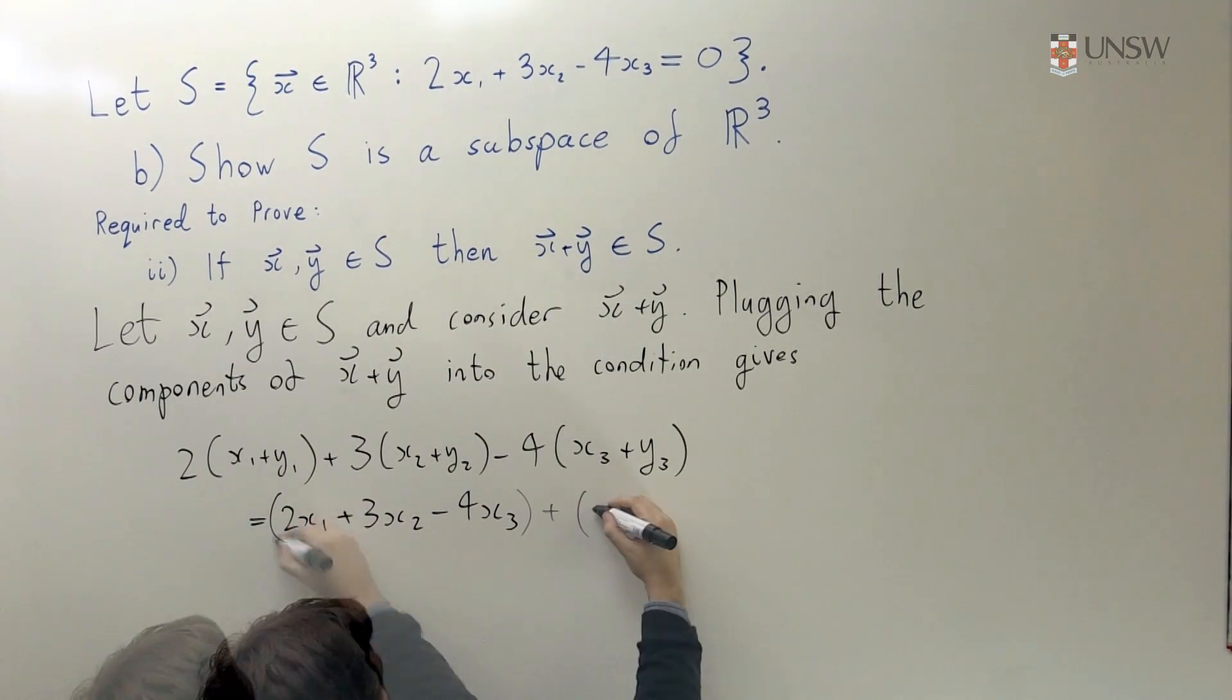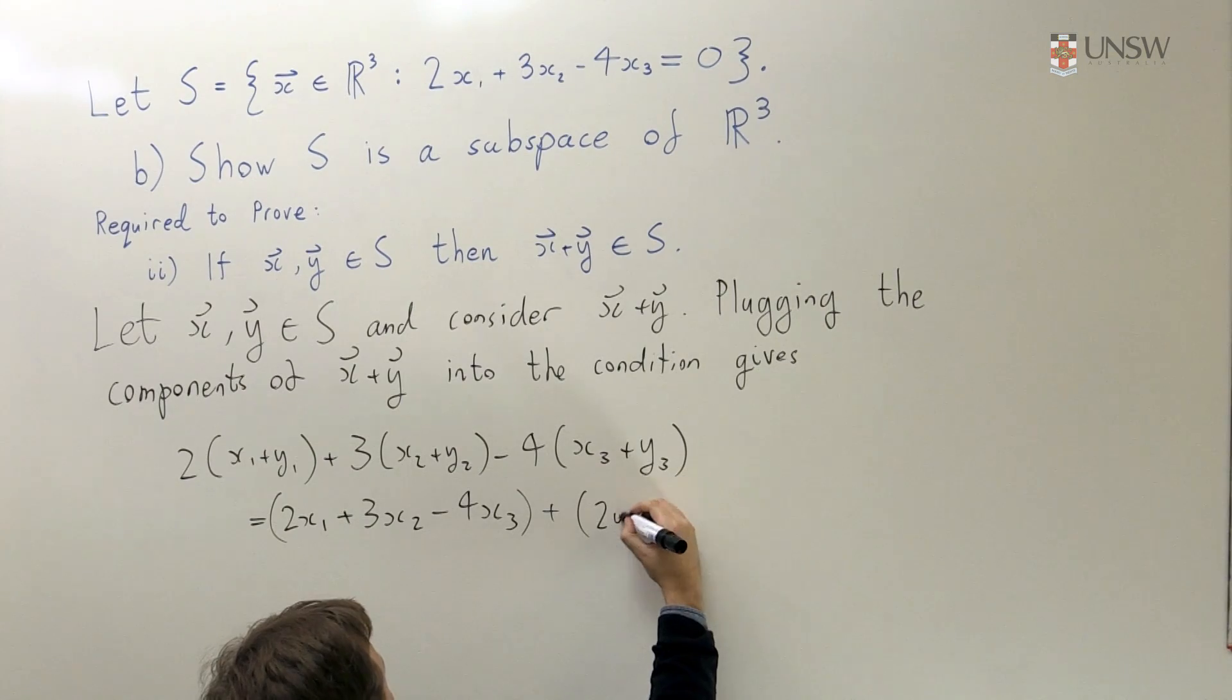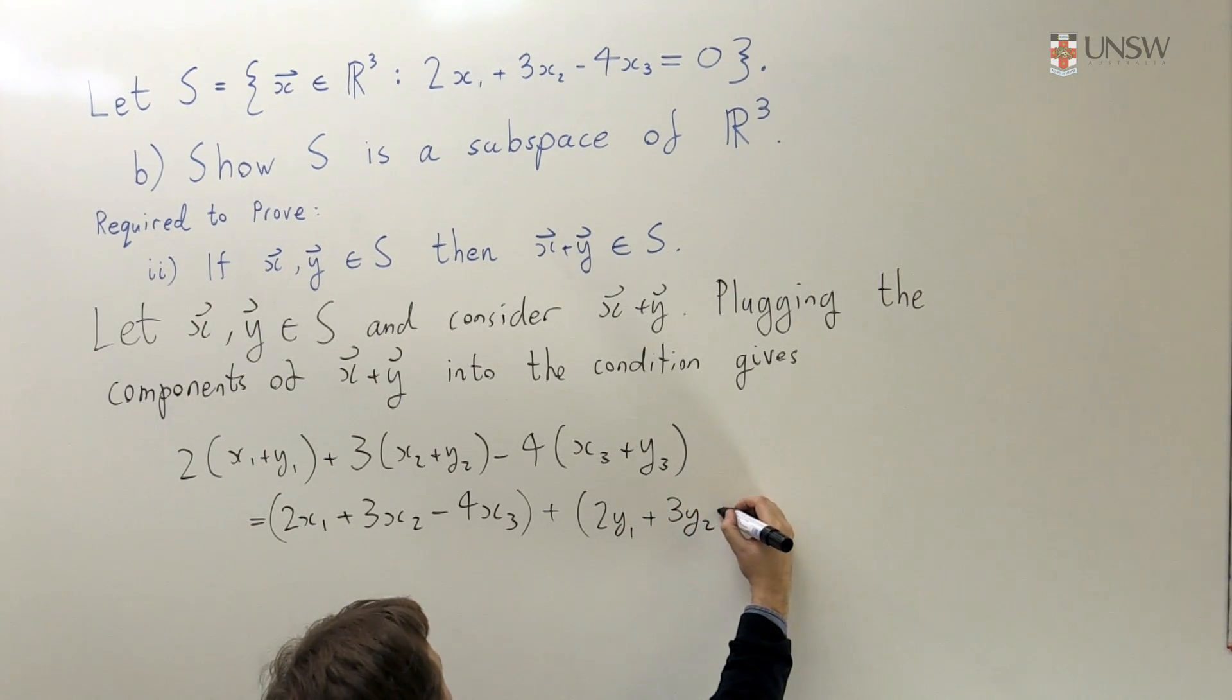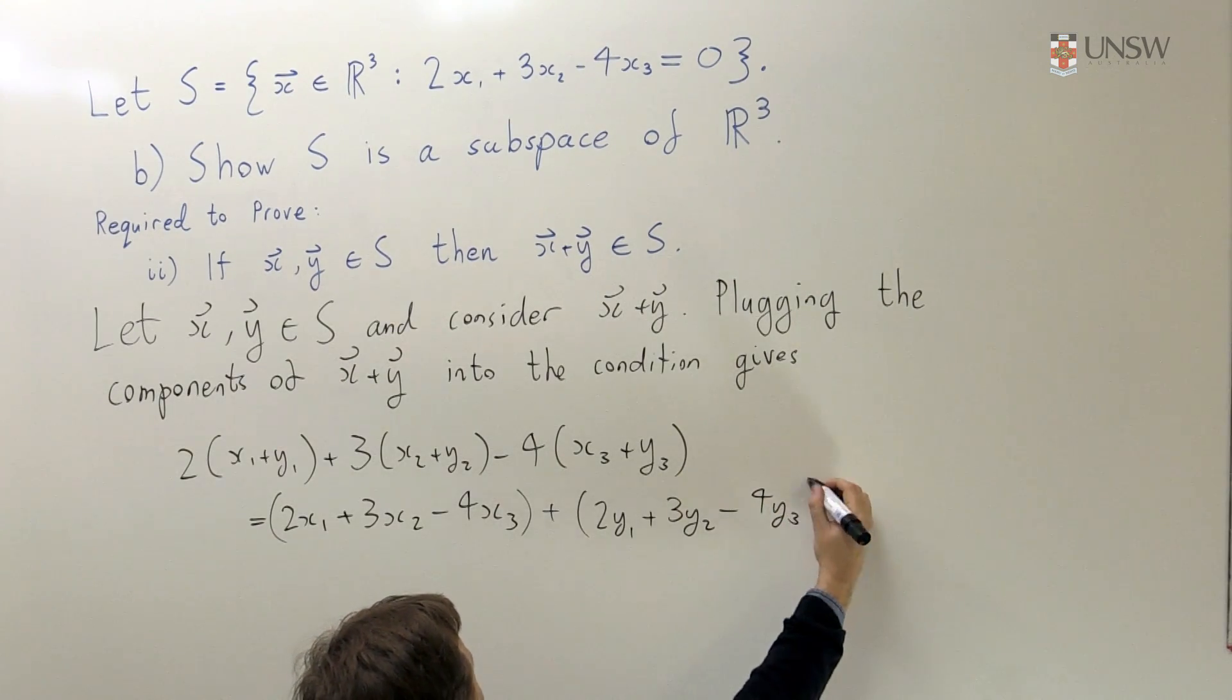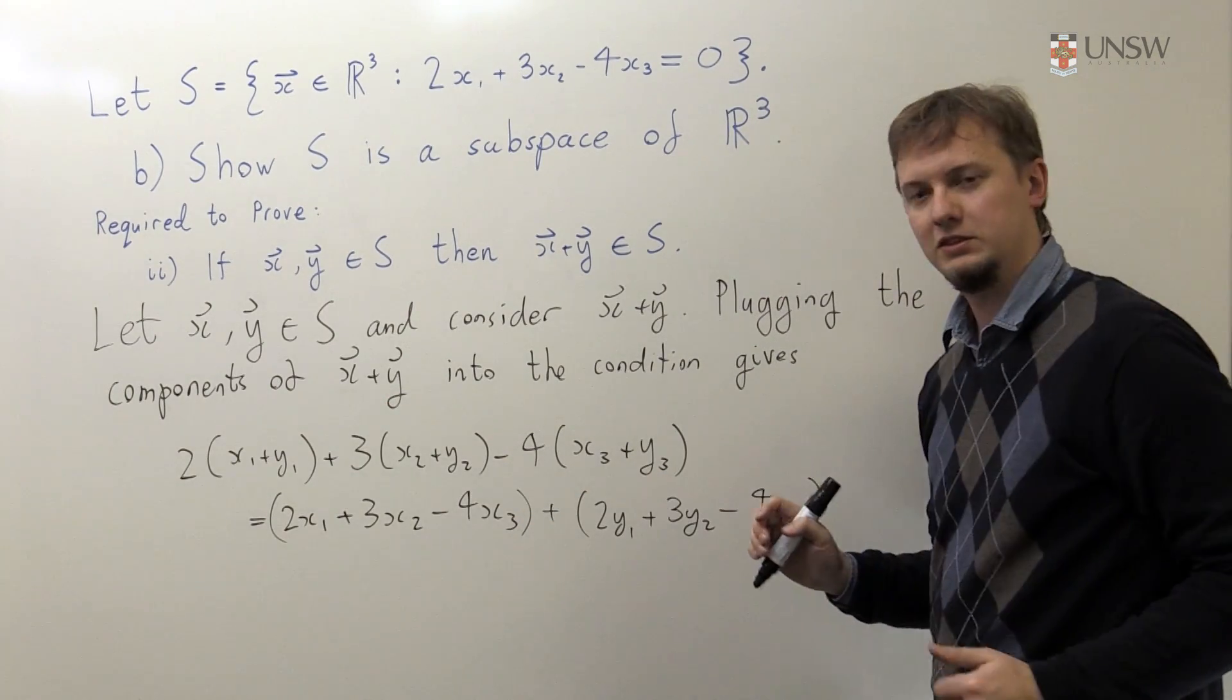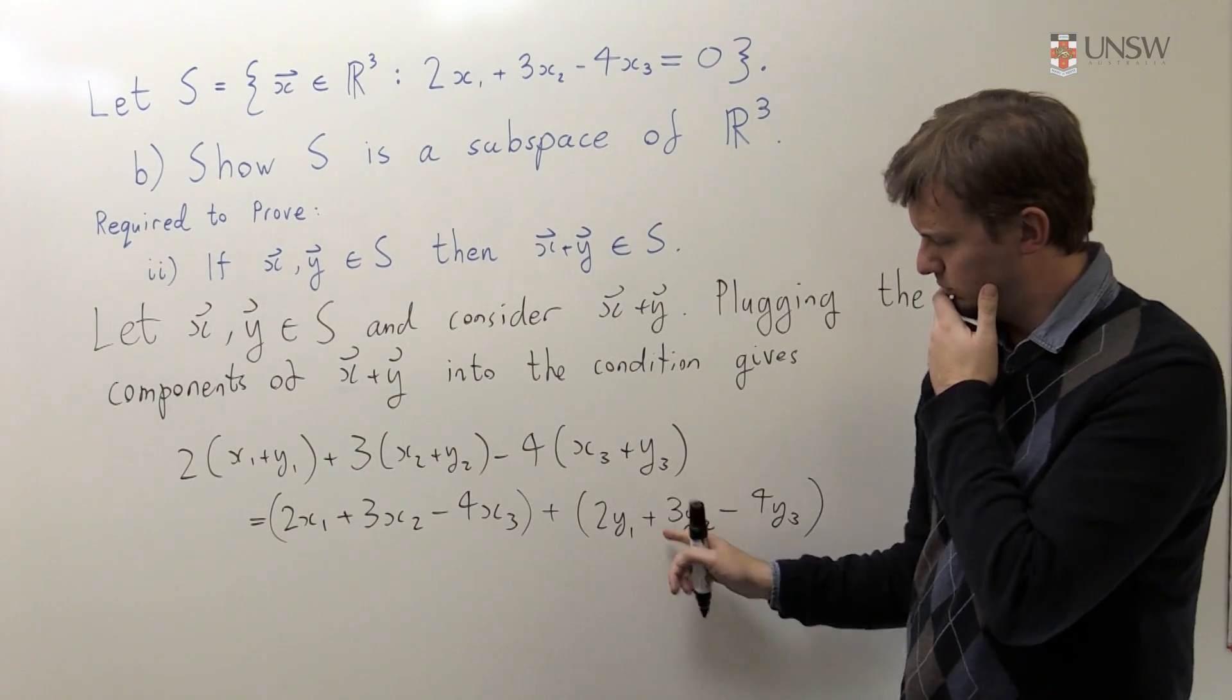This equals 2X1 plus 3X2 minus 4X3, adding on 2Y1 plus 3Y2 minus 4Y3. So all I've done is I've taken this combination and rearranged it to give me this, but these two quantities are quite familiar.